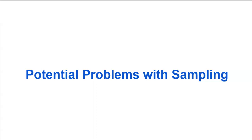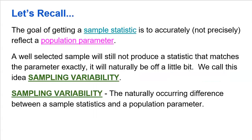Our goal is to focus on potential problems that occur with sampling. Remember, the idea is that we want to gain information about a population. A census is a great idea, but oftentimes pretty hard to do. So we take a sample, and the ultimate goal is for that sample to be representative of the population. The goal of getting a sample statistic is to accurately — not precisely — reflect a population parameter.